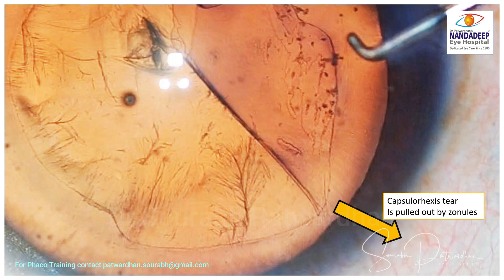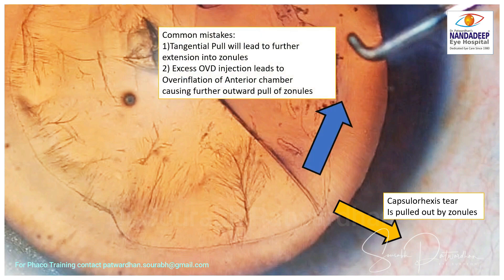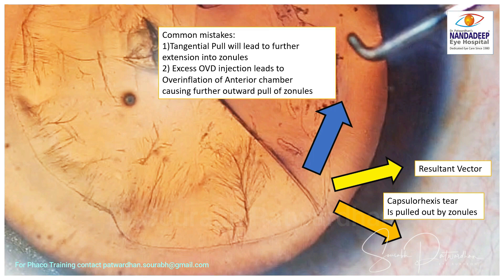When you pull it exactly opposite, only then will it come inside. The first common mistake is pulling it tangentially, which is more intuitive when doing capsulorhexis, but the resultant vector is still outward. That's why the capsulorhexis tear still goes outward when you pull tangentially and not centripetally. Understanding the play between these forces is very important to bring the capsulorhexis back inside.